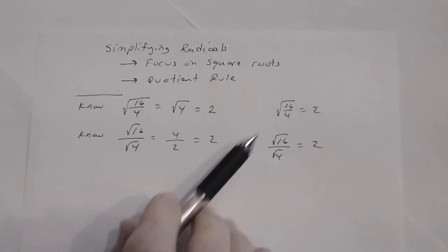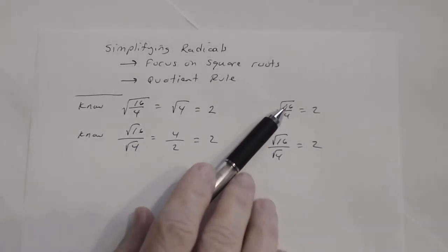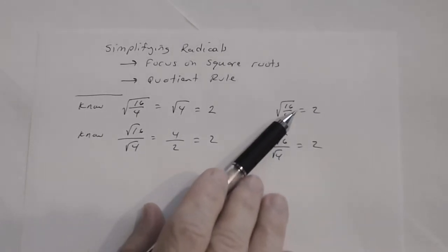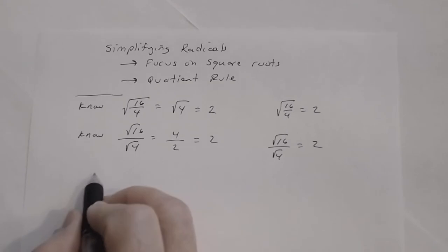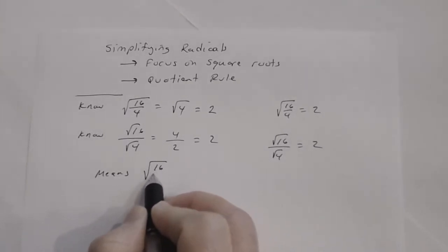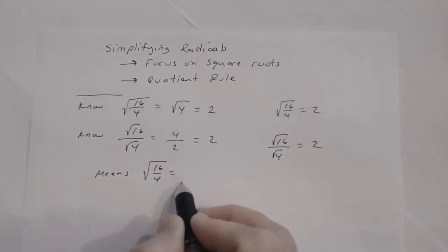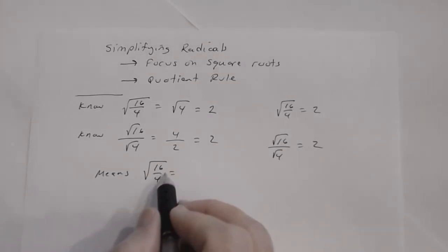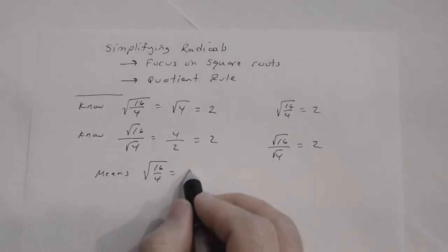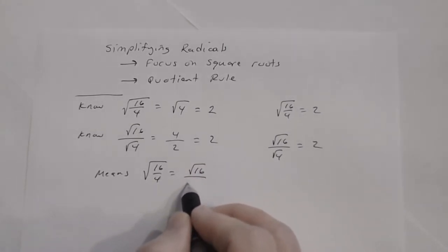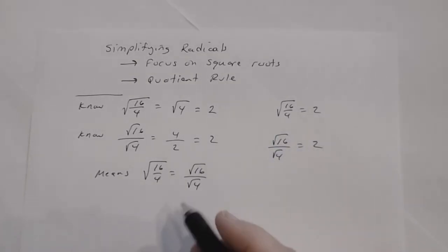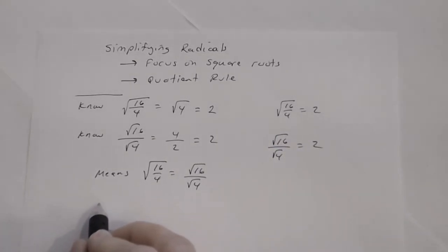So if I look at those two statements, these two expressions are equal to the same number, which means they have to equal each other. So that means the square root of 16 divided by 4 — where I'm taking the square root of a fraction — I can rewrite as the square root of the numerator divided by the square root of the denominator. That's what leads us to the quotient rule.